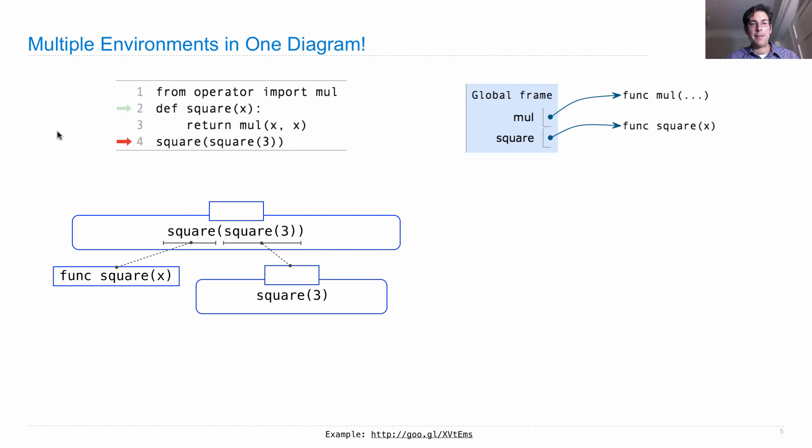Okay, so before we can move on, we need to evaluate that. So we evaluate square, that gives us the same square function. 3 is 3. We now apply the square function to the argument 3. What happens there? Well, we create a new frame. Here it is. We bind the formal parameter x to the argument value 3, and then we execute the body, which involves evaluating mul(x, x). So we're going to multiply 3 times 3, because this is the current environment. We get 9.